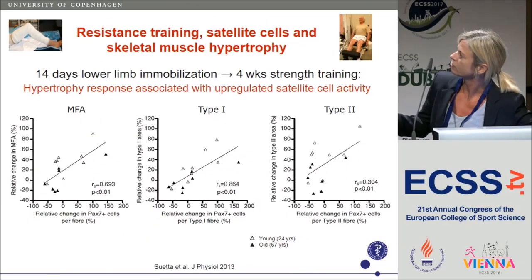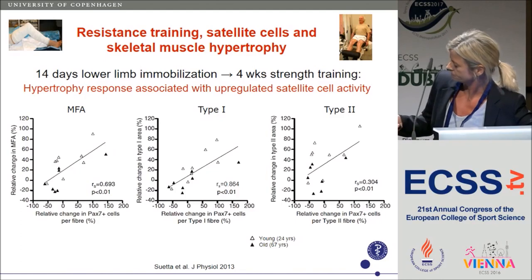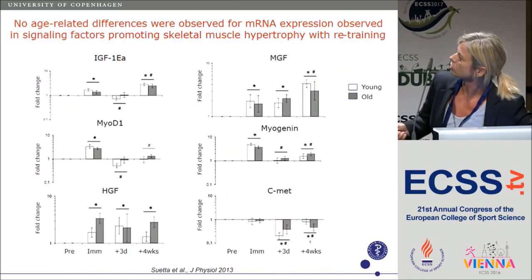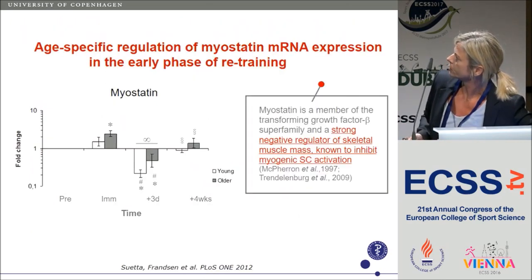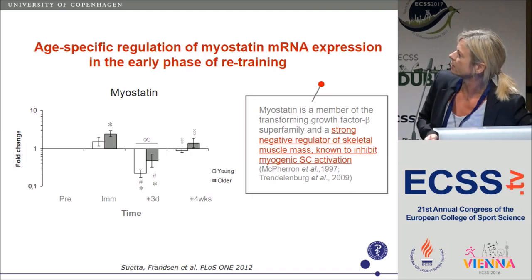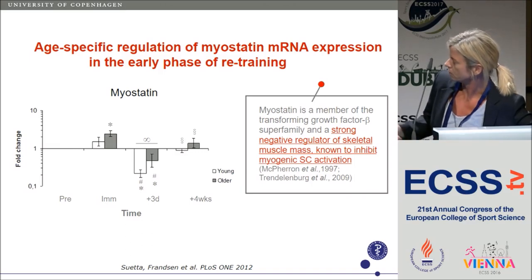We also saw a correlation between myofiber area and changes in number of satellite cells, both for collapsed myofiber area and for type 1 and type 2 fiber area. When we looked at gene expression, we didn't see any age-related differences in signaling factors normally known to promote skeletal muscle hypertrophy. However, myostatin was regulated in a very age-specific way: increased expression with immobilization in old only, and a less marked decrease with the start of retraining in the old. In contrast, young individuals showed a marked decrease in myostatin expression with retraining.